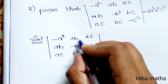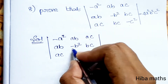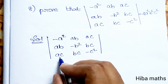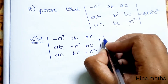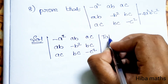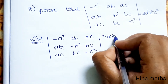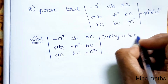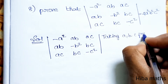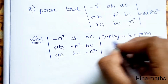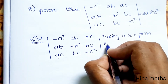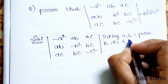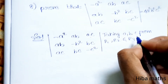If you observe row 1, a is common; b is common in row 2, and c is common in row 3. So what I am doing is taking a, b, c from R1, R2, and R3 respectively — factoring out abc.